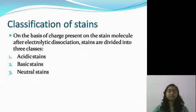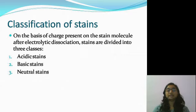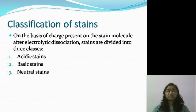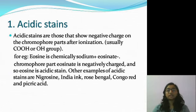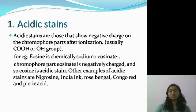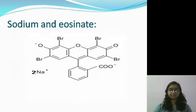After that, we looked at the classification of stains — how we can classify stains. The classification is based on the electrolytic dissociation of the stain. When electrolytic dissociation occurs, we look at what charge appears on the chromophore part. On this basis, stains are categorized into three categories: acidic, basic, and neutral stains. Acidic stains are those which possess or show a negative charge on the chromophore part after electrolytic dissociation. An example we discussed is eosin, whose chemical nature is sodium⁺ and eosinate⁻.